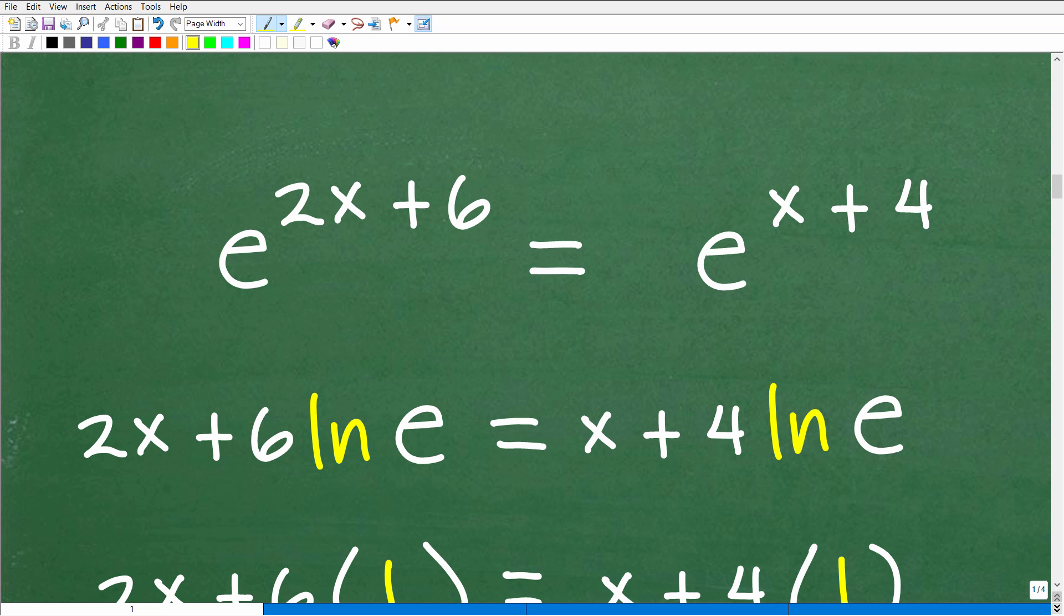Okay, so the first thing that we're going to do here is we want to take the log of both sides, meaning the logarithm of both sides, and because it's base e, we're going to take the ln of both sides. All right, now when we do that, some cool things happen. We can actually use a very interesting property of logarithms, and that is you can take the exponent, this entire thing, and move it in front of this ln.